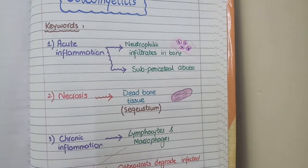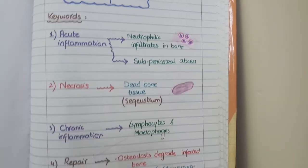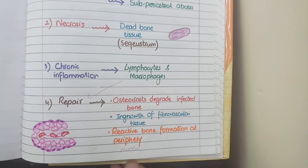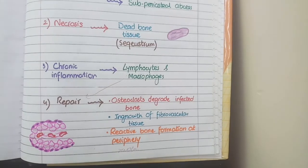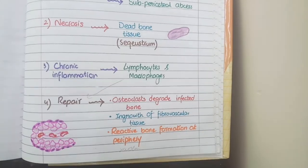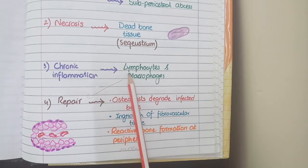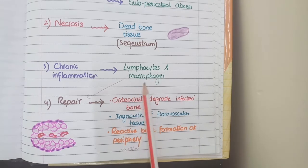After the acute inflammation phase is over, there is onset of chronic inflammation, and this chronic inflammation is characterized by chronic inflammatory cells — that are lymphocytes and macrophages.